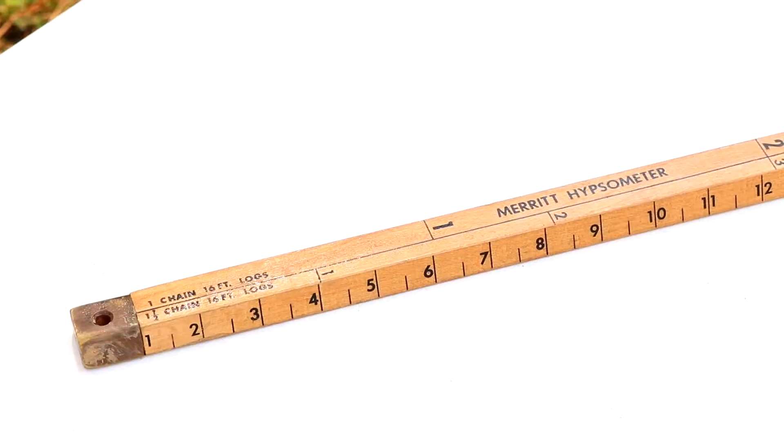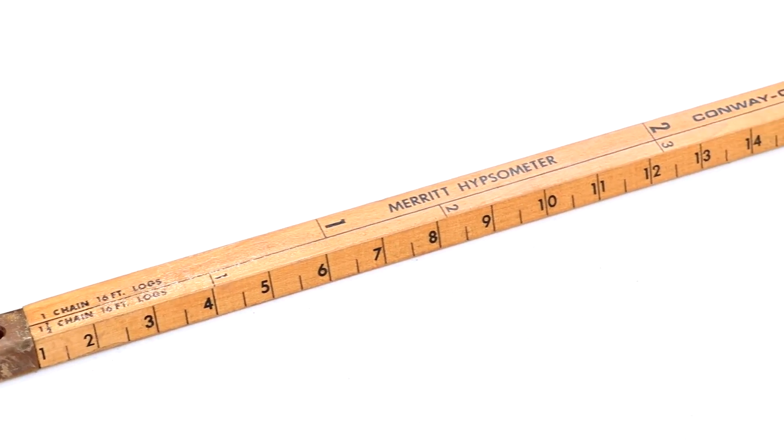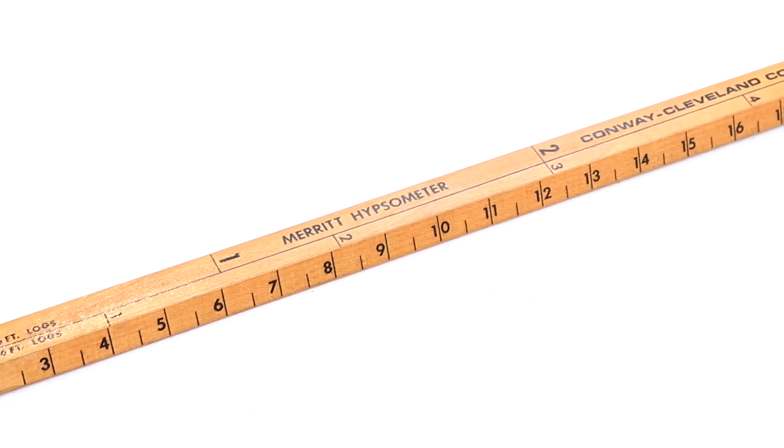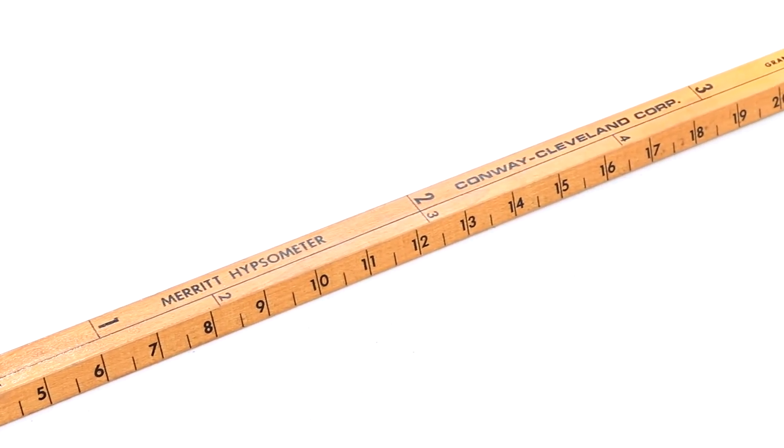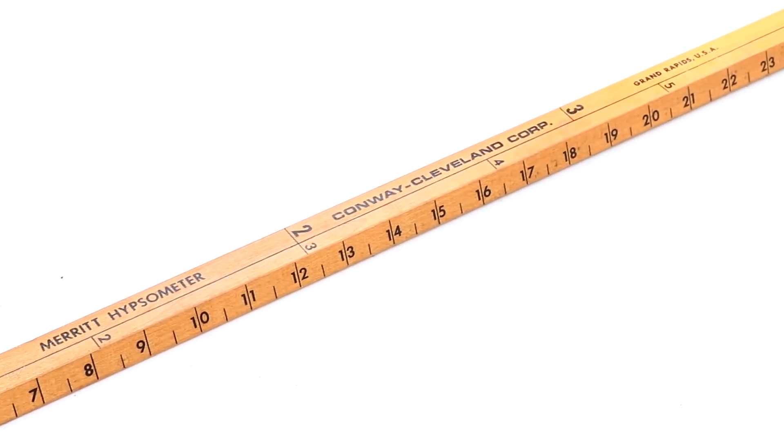You will notice manufactured merit hypsometers are in 16-foot log and 8-foot half-log lengths. You can calculate log length graduations for your personalized merit hypsometer using the following formula.